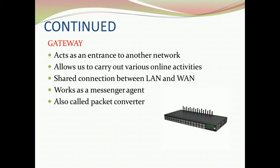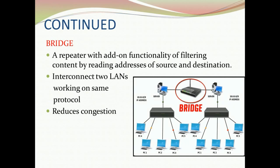The last networking device is bridge. It is a repeater with the add-on functionality of filtering content by reading the addresses of source and destination. It interconnects two local area networks working on the same protocol. It reduces congestion because it filters the data by reading the address of source and destination. Thank you for watching the video.